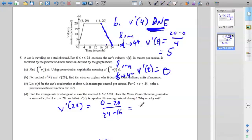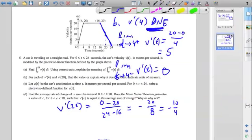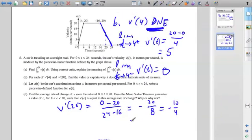And this equals negative 20 over 24 minus 16 is 8. So 20 divided by 8 is 10 over 4, and 10 over 4 equals negative 10 over 4 equals negative 5 over 2.